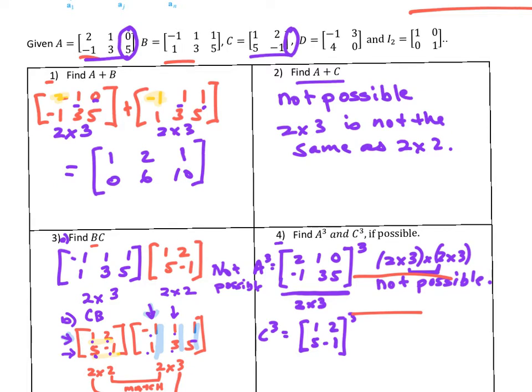What kind of matrix do I need to raise it to a power? Is C³ possible? It's 2×2. Can we multiply 2×2 by 2×2? Yeah, we get 2×2. Yes, if we have a square matrix, raising to a power is possible.